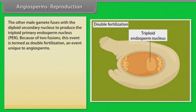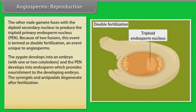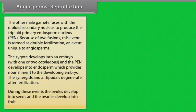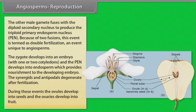Because of two fusions this event is termed as double fertilization, an event unique to angiosperms. The zygote develops into an embryo with one or two cotyledons and the PEN develops into endosperm which provides nourishment to the developing embryo. The synergids and antipodals degenerate after fertilization. During these events the ovules develop into seeds and the ovaries develop into fruit.